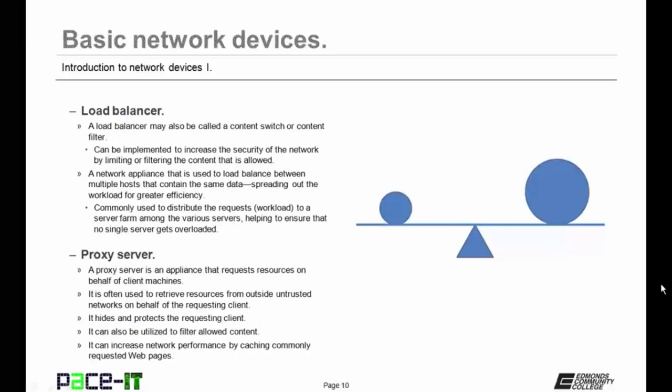A load balancer may also be called a content switch or content filter. Load balancers can be implemented to increase the security of a network by limiting or filtering the content that is allowed to be on the network. A load balancer can be a network appliance that is used to load balance between multiple hosts that contain the same data, spreading out the workload for greater efficiency. Load balancers are commonly used to distribute requests to a server farm among the various servers, helping to ensure that no single server gets overloaded.